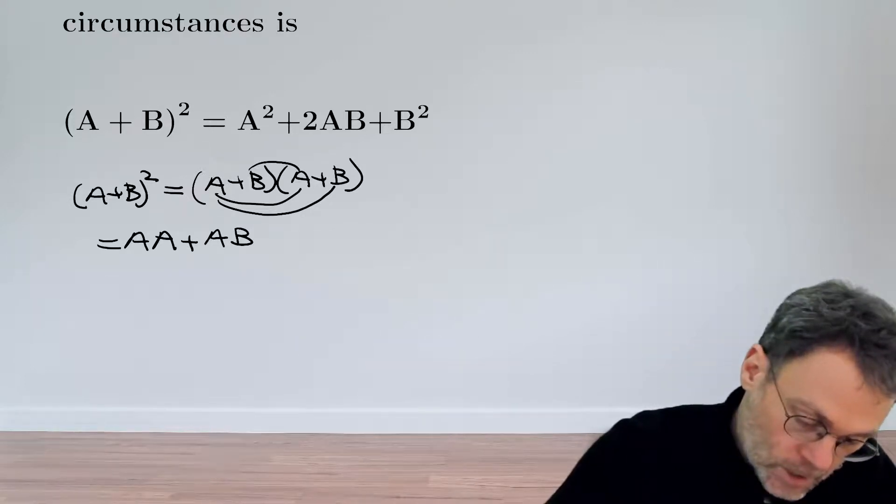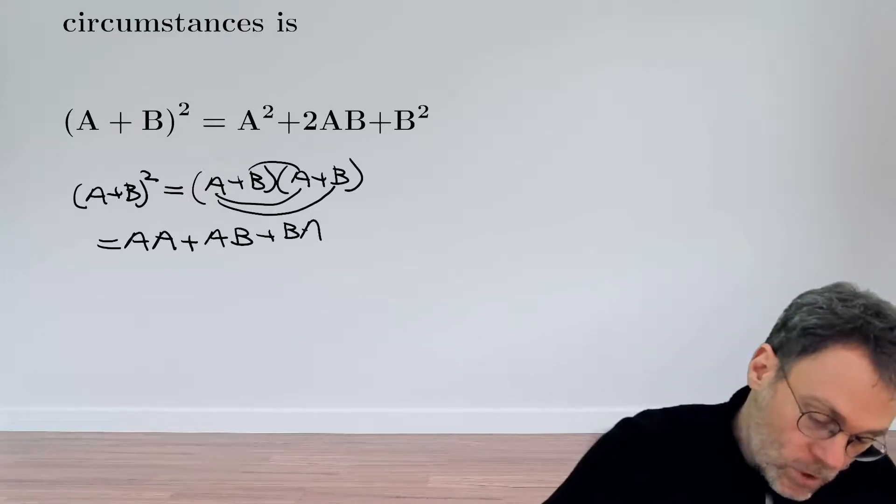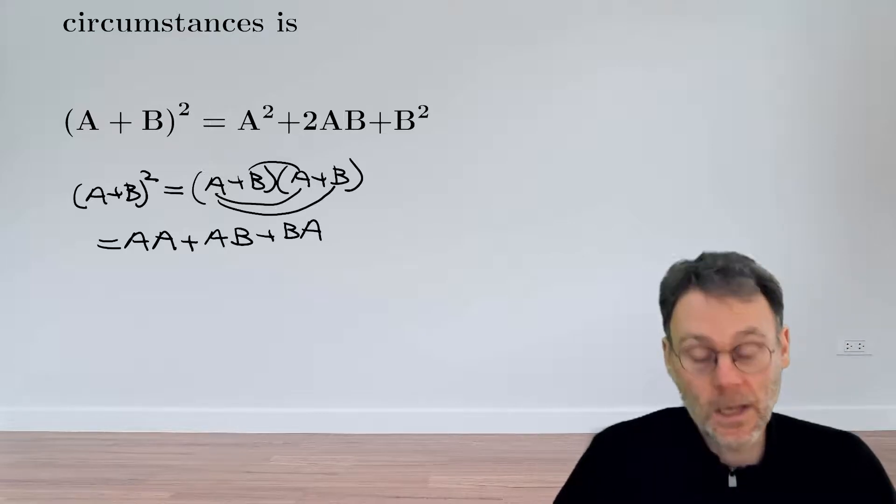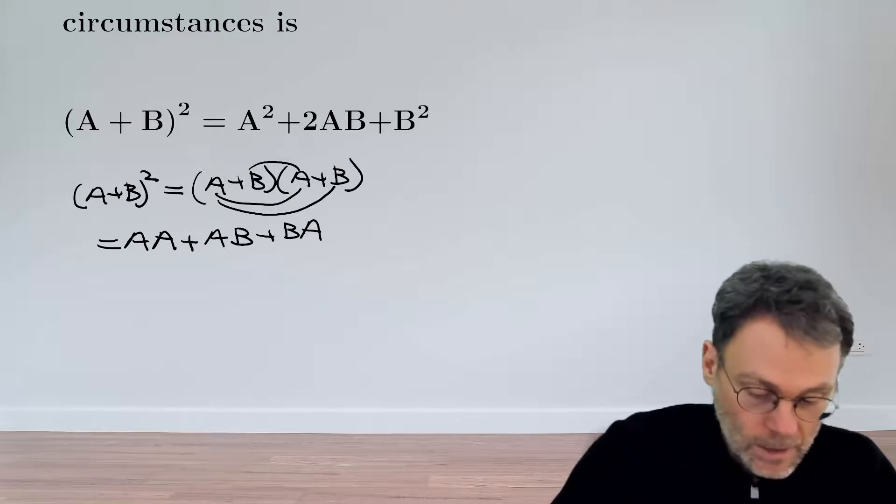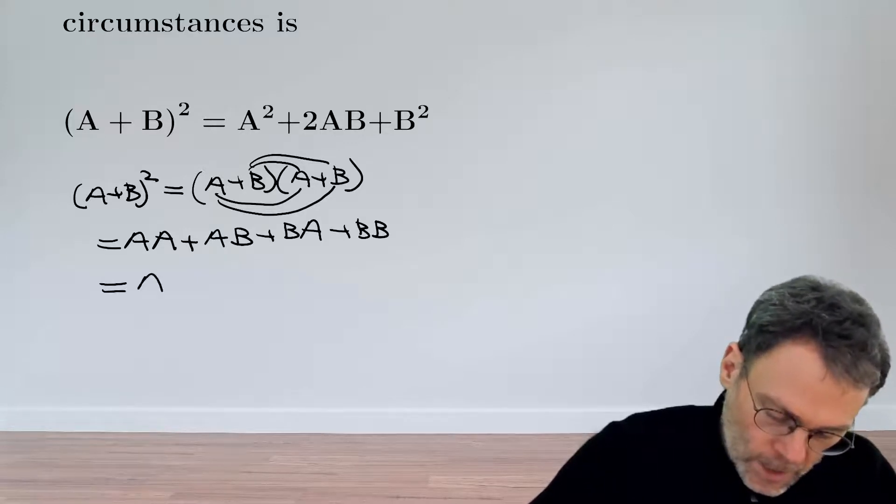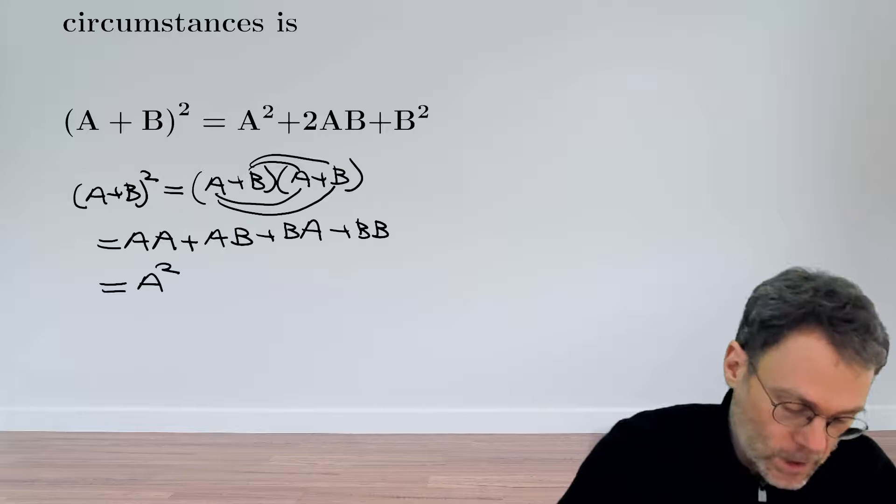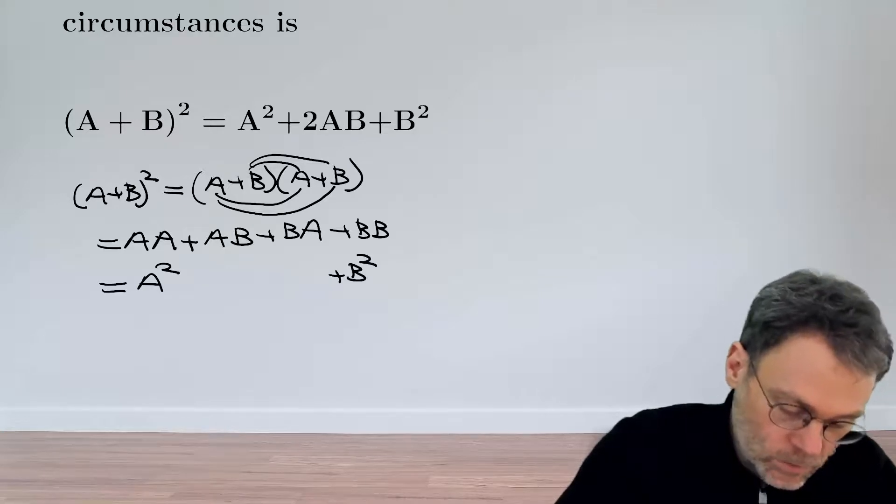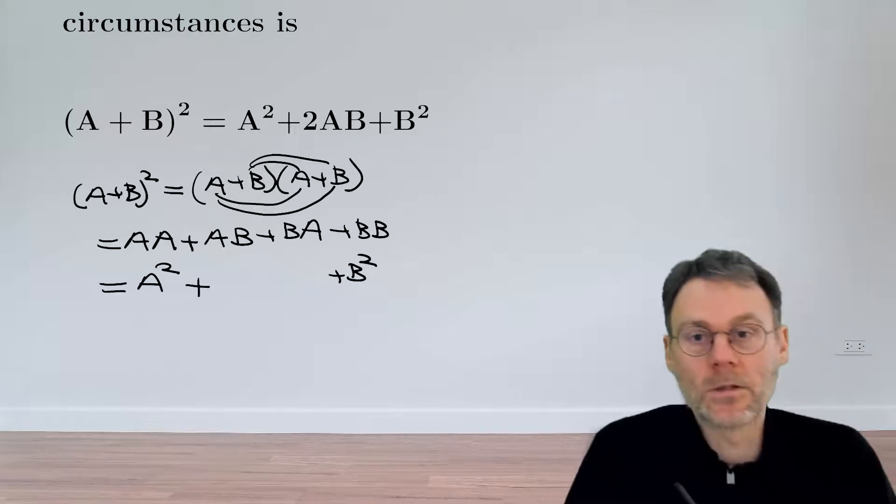Thirdly, we have BA, which means first operating with A and then with B. And finally, we have BB. Operating with A twice we can write as A², and operating with B twice as B².